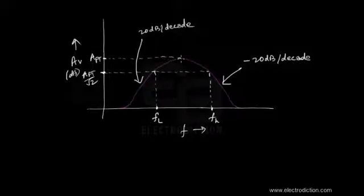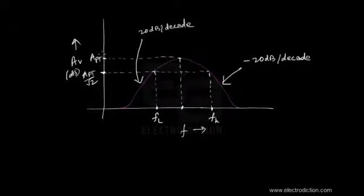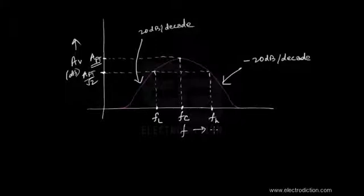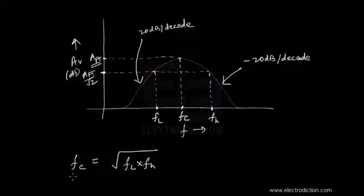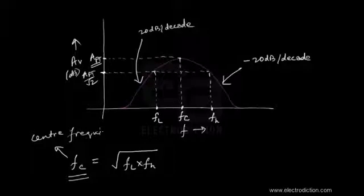Somewhere between FL and FH there is a point at which the gain is maximum — this is the center frequency FC. The center frequency FC is given by the square root of the product of FL and FH: FC = √(FL × FH). This is the center frequency of the bandpass filter.